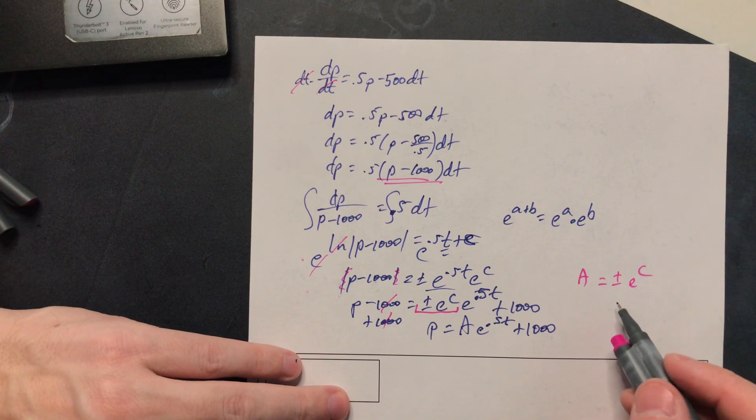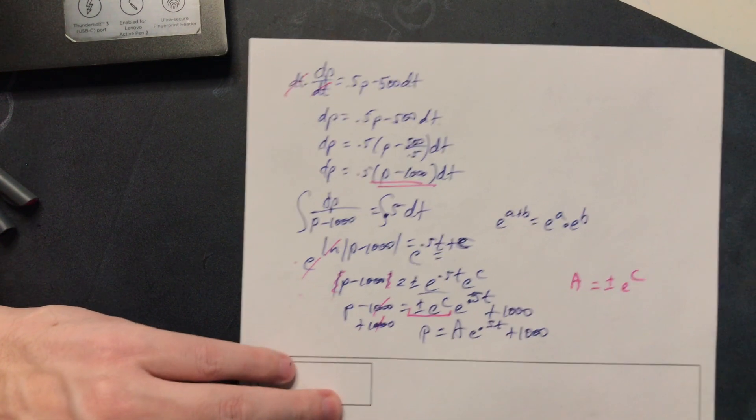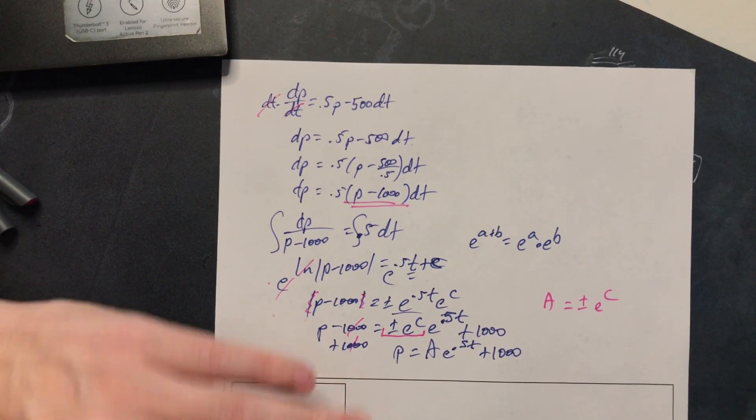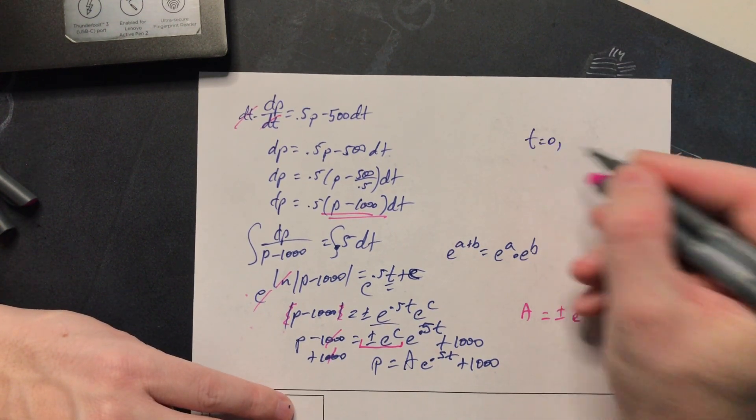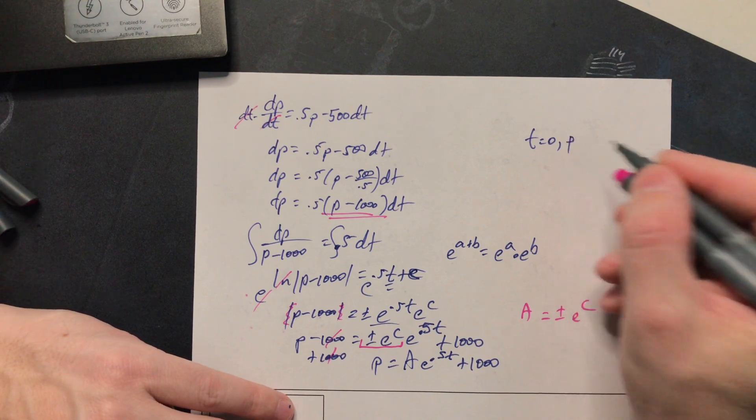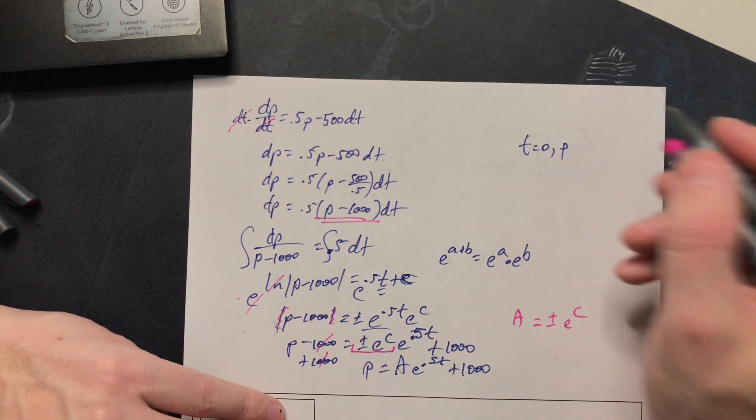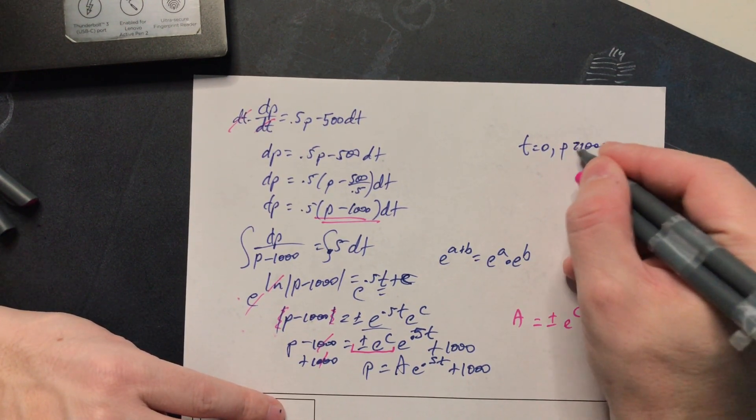Now the way you would do this from here is you apply some initial condition whatever it happens to be. So if you invent one, imagine that when t is zero then you want p to have some specific value. So say 2,000.